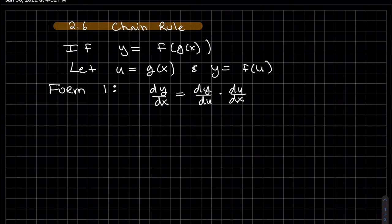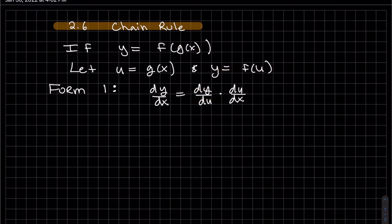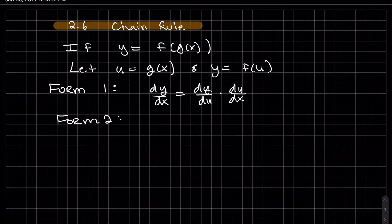This first form looks easy enough. You can see we can basically break down the differentials and put a u in there, and that becomes helpful in other sections. You can also see that if y is f of u, it's the derivative of y in terms of u, and u is g of x which is in terms of x — it's dy/du times du/dx. Our second form is the form I'm going to use; it's much clearer when we're doing the problem.